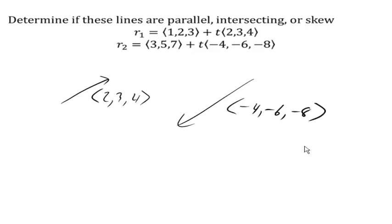Now you might notice that this vector is exactly negative 2 times the first one. So negative 2 times the vector 2, 3, 4 is negative 4, negative 6, negative 8.